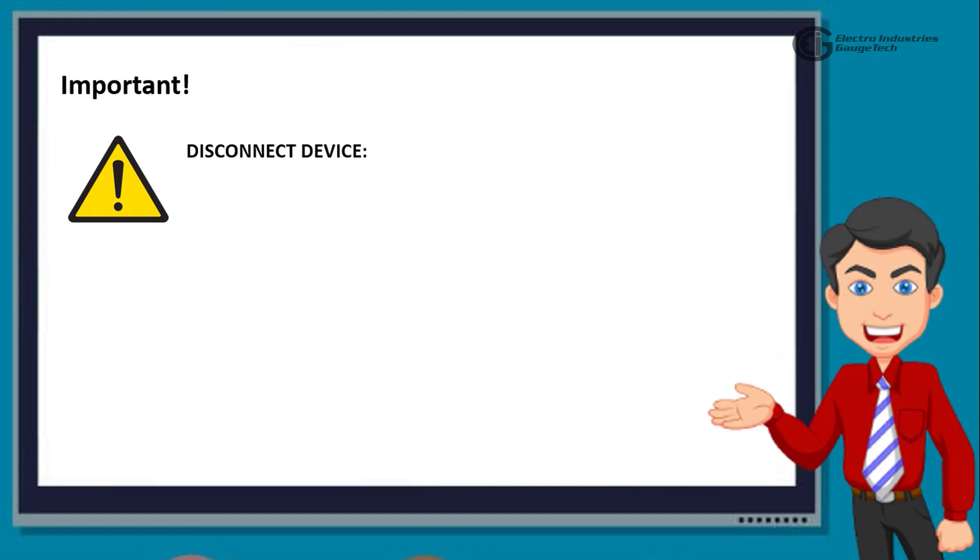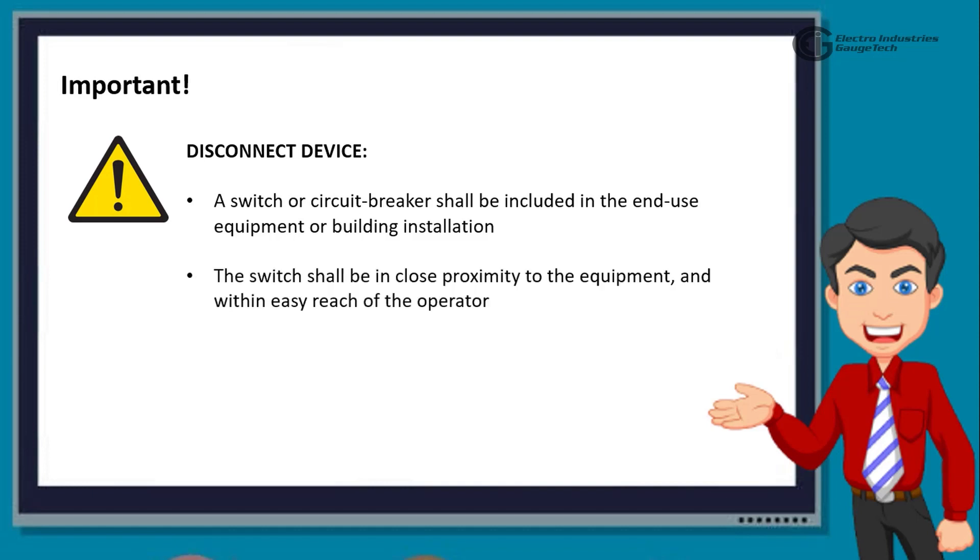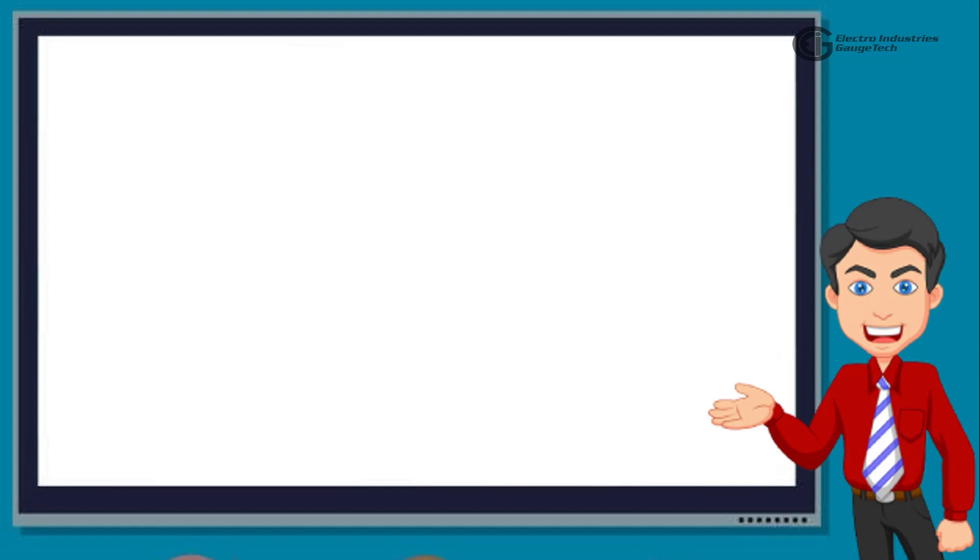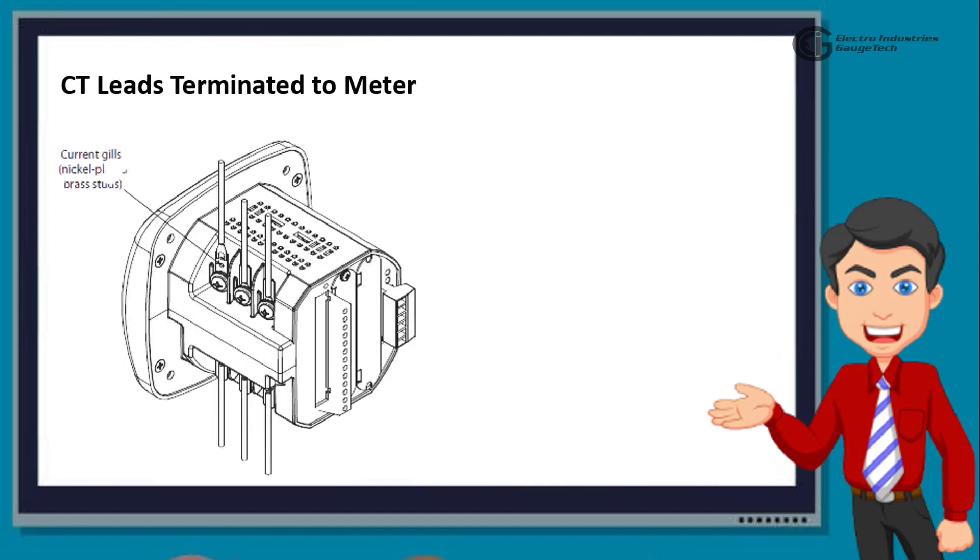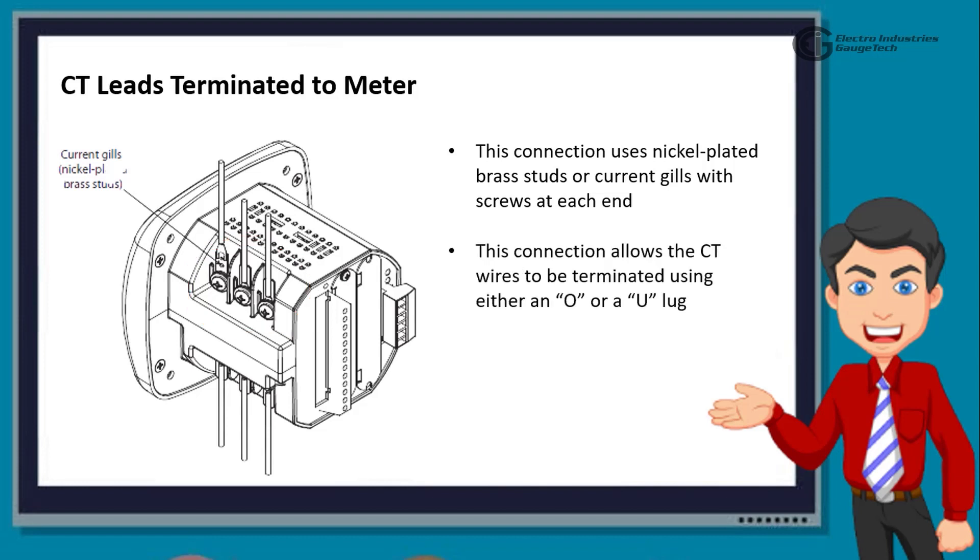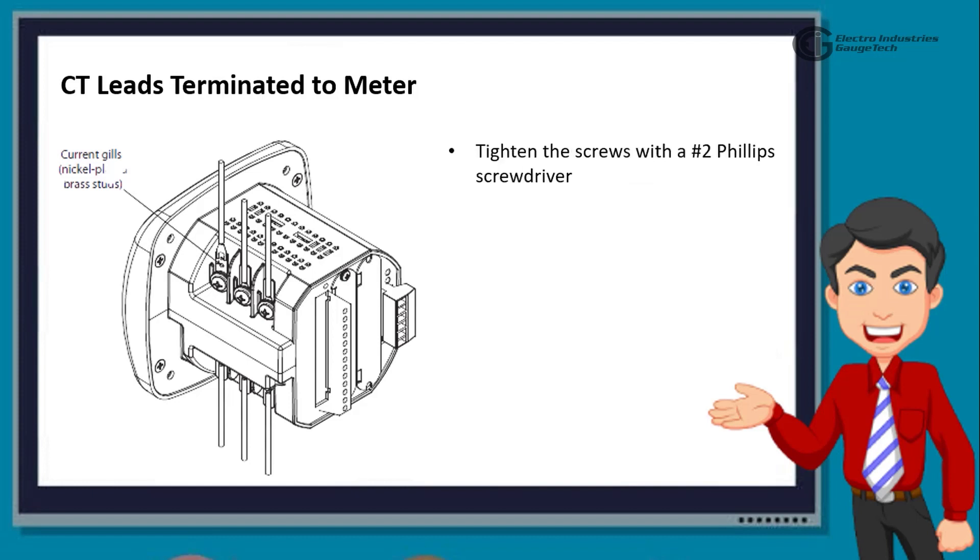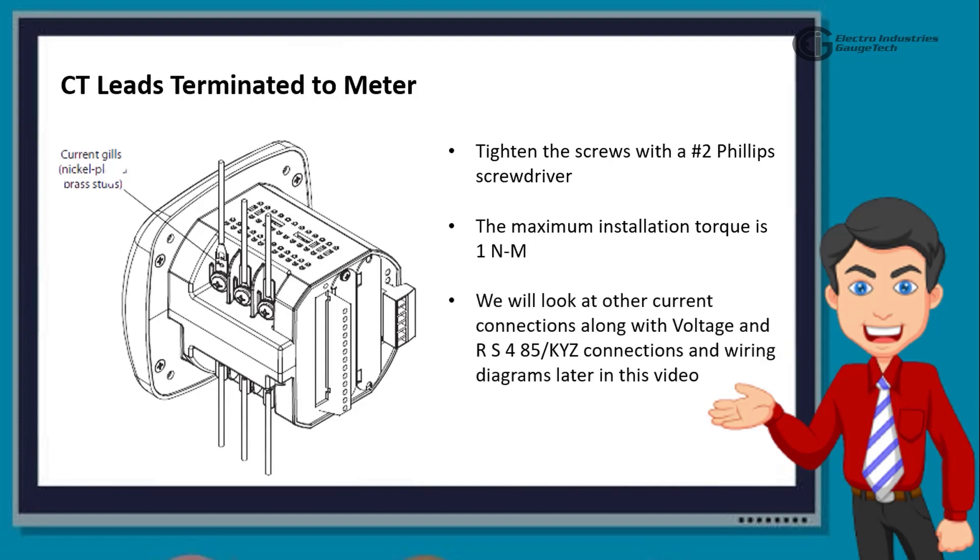Now, let's talk about the disconnect device which is an important part to be considered here. A switch or circuit breaker shall be included in the end-use equipment or building installation. This switch shall be in close proximity to the equipment and within easy reach of the operator. This switch shall be marked as the disconnecting device for the equipment. Next, we move to the CT leads terminated to meter. If you look at the image here, it shows the most typical connection where CT leads are terminated to the meter at the current gills. This connection uses nickel-plated brass studs or current gills with screws at each end. This connection allows the CT wires to be terminated using either ring or a U-lug. Tighten the screws with a number 2 Phillips screwdriver. The maximum installation torque is 1 Newton meter.